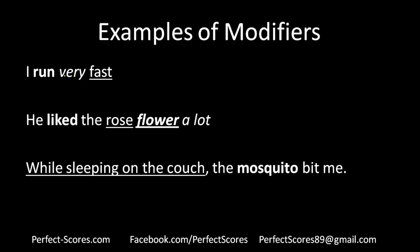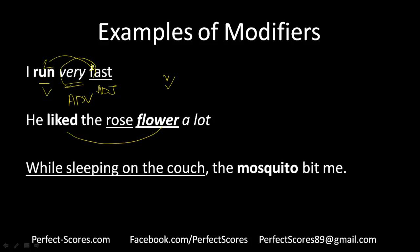'I run very fast' — run is a verb, fast is the adjective, and very is the adverb modifier. 'He liked the rose flower a lot' — rose acts as an adjective modifier telling us what kind of flower, and 'a lot' acts as an adverb modifier telling us how much he liked. Both rose and 'a lot' are modifiers in this sentence.